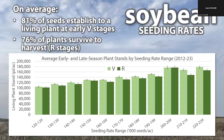Let's look at that more with our data. Along the bottom we have different seeding rate ranges in 10,000 seeds per acre bundles from 120 to 220,000 seeds per acre. What we're showing are the living plant stands resulting from those different seeding rates at early V stages in the light color on the left, and in the darker color at our stages later in the season closer to harvest on the right. On average, 81% of seeds establish a living plant stand at those early V stages and 76% of those plants are surviving to harvest.